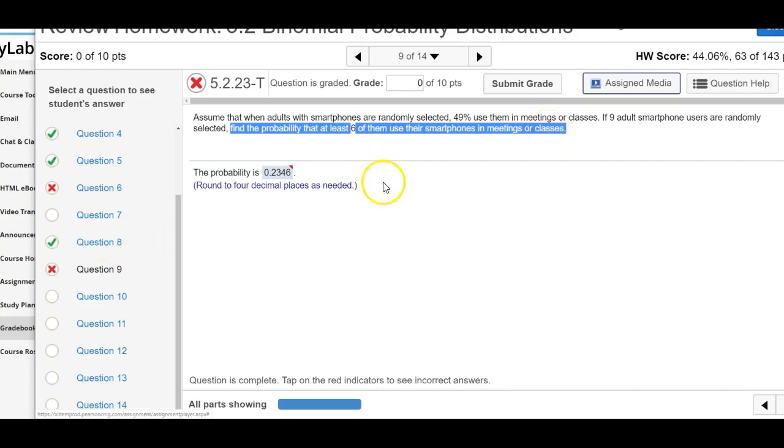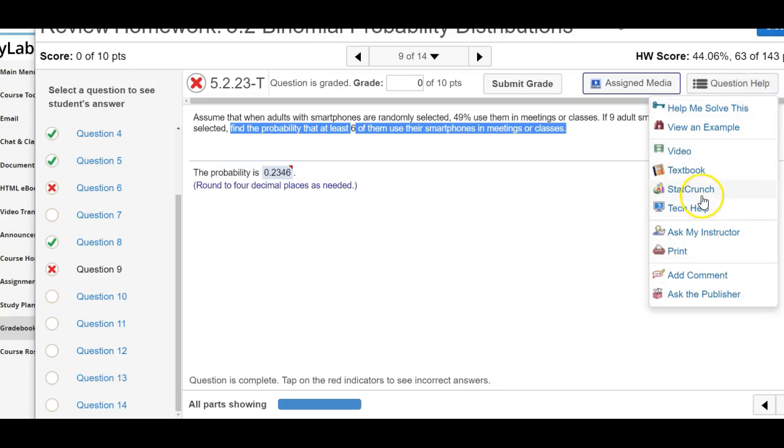So in the answer before it, it might have been exactly six. The at least six means six, seven, eight, or nine. So if you go to the question help and you go to StatCrunch, this is going to be the calculator we can use here.